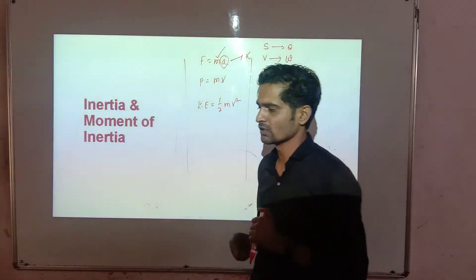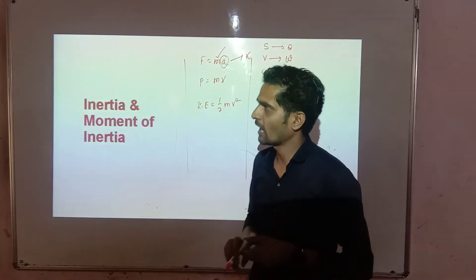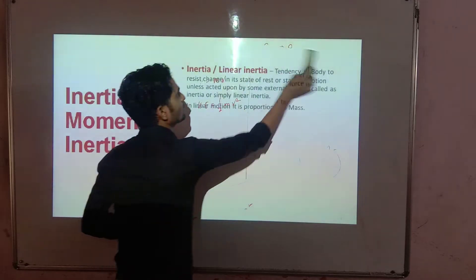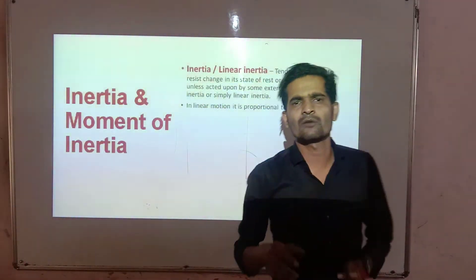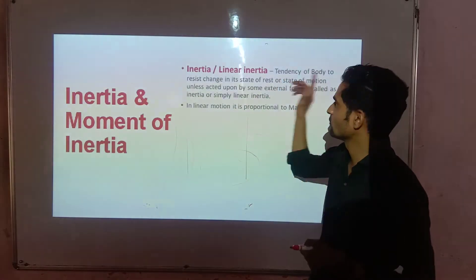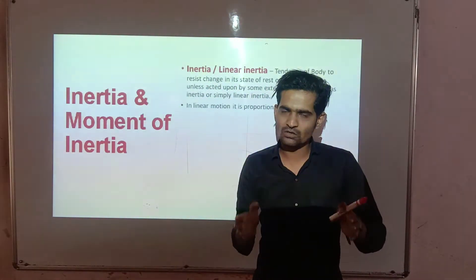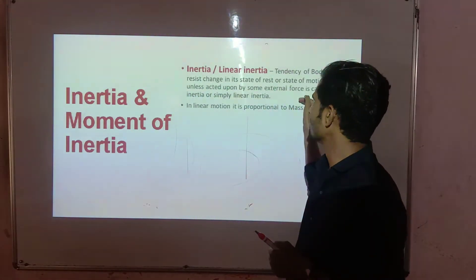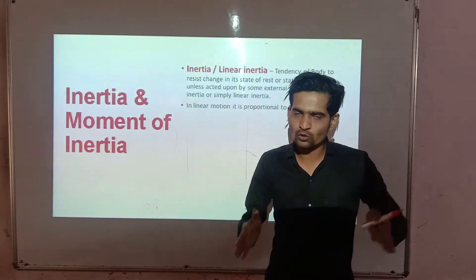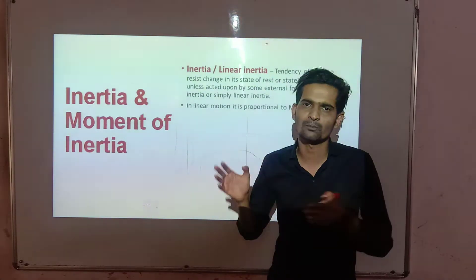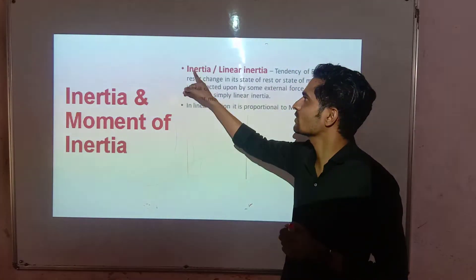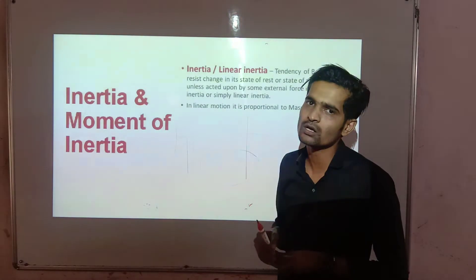Inertia means linear inertia. The simple definition of inertia is: it is the ability or tendency of a body to resist change in its state of rest or state of motion, until an external force is applied. A body at rest will remain at rest, and a body in motion will remain in motion, unless an external force acts on it.